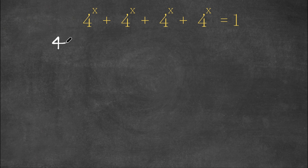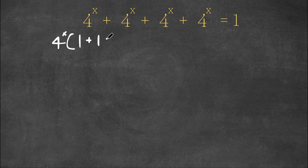So now we have 4 to the power of x times — 4 to the power of x divided by 4 to the power of x is 1, plus the same thing here, 4 to the power of x divided by 4 to the power of x is 1, plus again 1 and 1. And this is equal to 1.